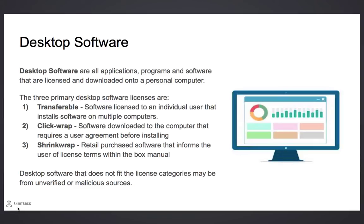ClickWraps are software that's downloaded to the computer after a user agreement has been completed. ShrinkWraps are retail software purchased out of the box, and the user's license terms are included in the manual. Any desktop software that does not fit a license category may be from an unverified or malicious source — always check before downloading.